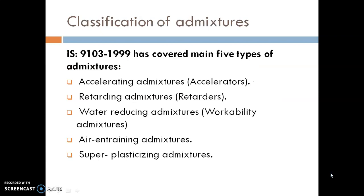The next topic is the classification of admixtures. According to IS code 9103:1999 Indian Standard, admixtures are mainly classified into five types: first, accelerating admixtures; second, retarders; third, water-reducing admixtures; fourth, air-entraining admixtures; and fifth, super-plasticizing admixtures.